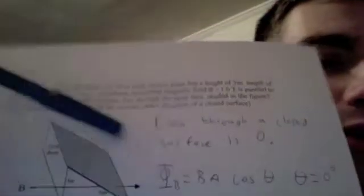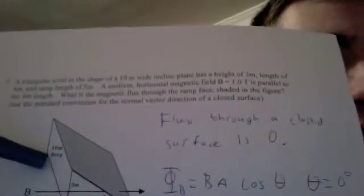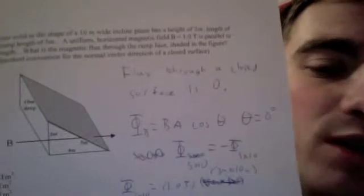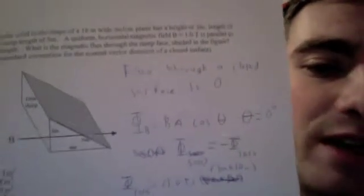So first off, the step to setting up this problem is looking at the figure. As you can see, B is going through this surface, then coming out of this surface. Flux through a closed surface is always zero. So that means that the total flux going into the flat surface on the left is the same as the surface coming out of the shaded area on the right. But they will have opposite signs because flux coming into a surface is positive and flux coming out is negative.